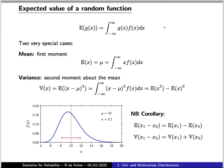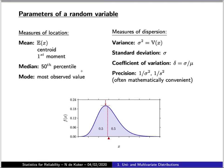Two special cases of the expected value: first, where the function is just the random variable itself — in that case the expected value is the mean, denoted mu. The other case is where it's the expected value of the square of the difference between any instance of the random variable and its mean, referred to as the second moment about the mean. This gives the expected mean square difference, commonly referred to as the variance.